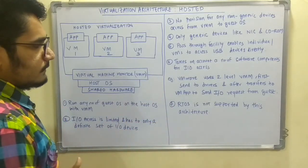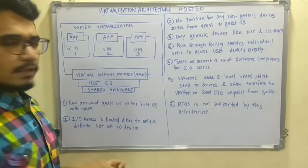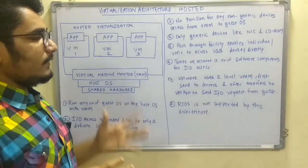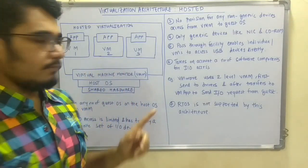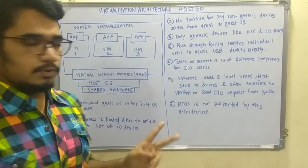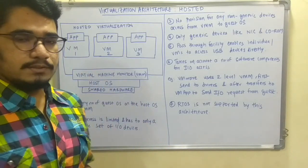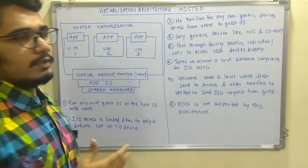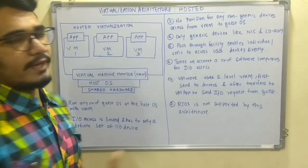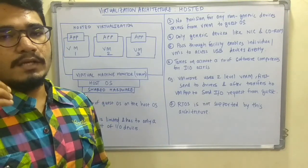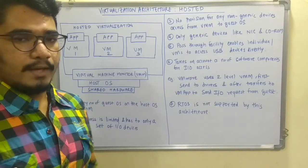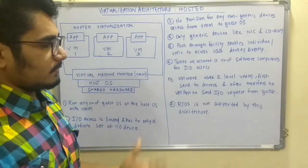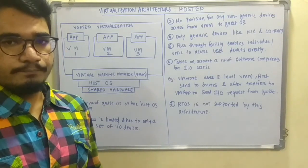As an example, in Windows you use VMware. VMware basically uses two levels of Virtual Machine Monitor. In the first stage it installs all the drivers and sends all the interrupts and calls to these drivers. Then this driver sends its output to the VM app, and from the VM app the IO request is sent for the guest OS to process any further activity.